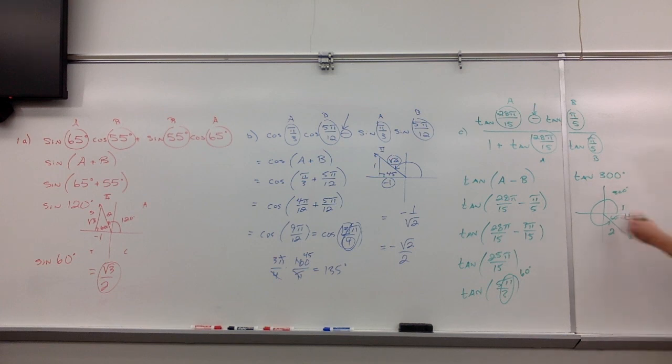So what is tangent? Tangent is opposite over adjacent. So we're looking at negative square root of 3 over 1, or negative square root of 3.